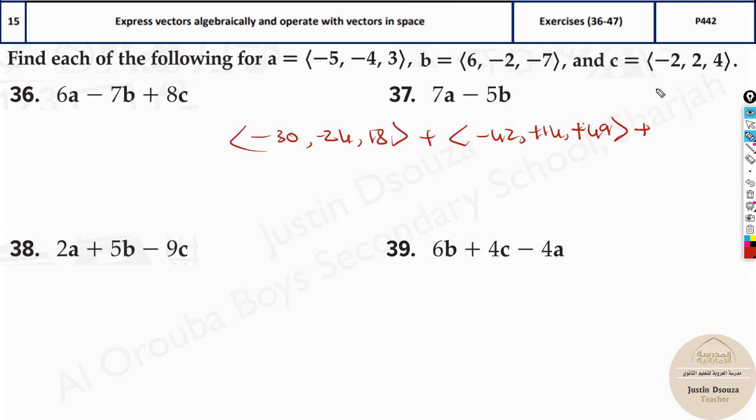And then lastly, we have 8 to be multiplied, it is going to be negative 16, 16 and 32.